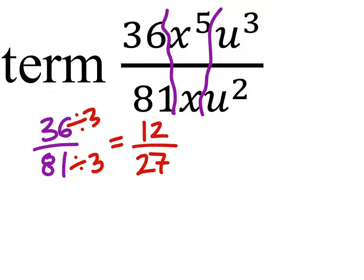Oh, I guess both of them were divisible by 9. That's okay. So divisible by 3 again. And we get 4 over 9. That's our number right there. So in the final expression, we'll have 4 9's.